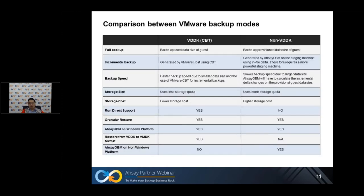This table shows a comparison of VMware backup modes between VDDK and non-VDDK. For a full backup job, if you are using VDDK CBT, OBM will back up the used data size of the guest VM, while non-VDDK will back up the provisioned data size. For example, if you provision a 1TB VM but only use 100GB, VDDK will back up 100GB while non-VDDK backs up the full 1TB — a significant difference in size.